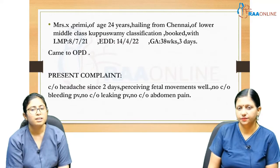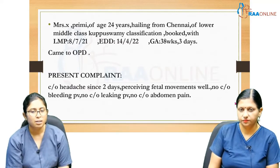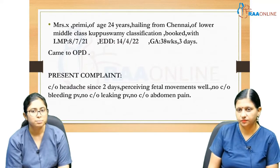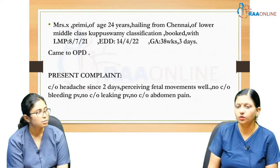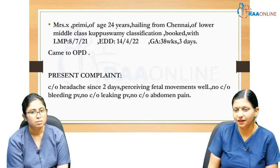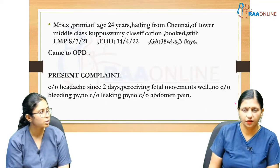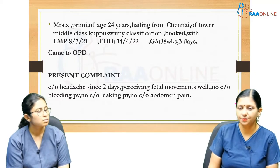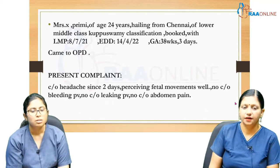EDD is calculated by Naegele's formula, that is LMP plus 9 months plus 7 days from the LMP, if the periods are regular. If the menstruation is irregular and the cycle is short by 7 days, then if it is less you have to subtract 7 days, and if the menstrual cycles are long then we have to add. Continue.